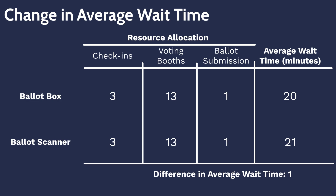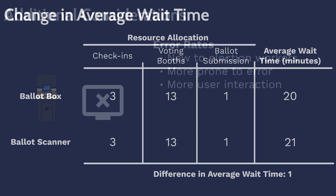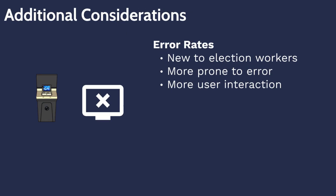Despite the presented voting process requiring no additional voting equipment when transitioning from a ballot box to a digital ballot scanner, additional considerations must be made. When introducing new voting equipment, it is critical to account for the rate of errors and breakdowns for the new device. When using a device that is new to voters, it is likely that voters will take longer to perform a voting step than expected, as they must become familiar with the new equipment.